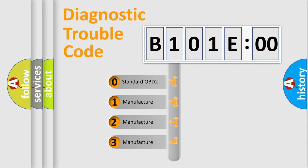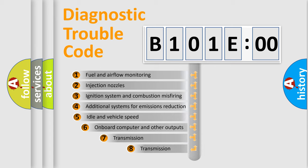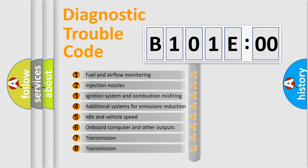If the second character is expressed as zero, it is a standardized error. In the case of numbers 1, 2, or 3, it is a more manufacturer-specific expression of the car-specific error.